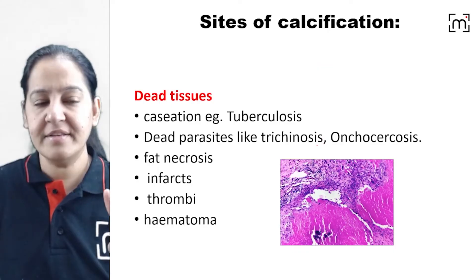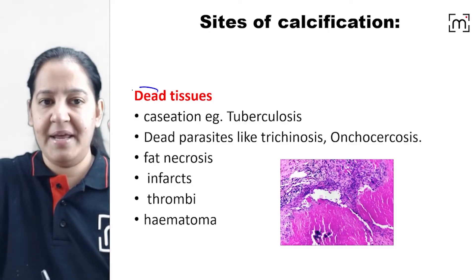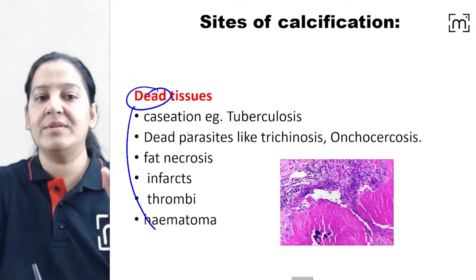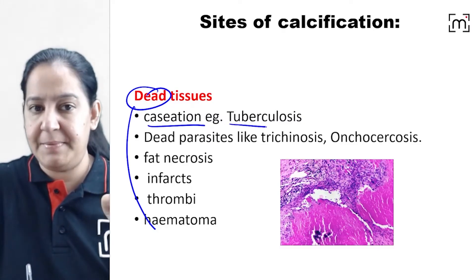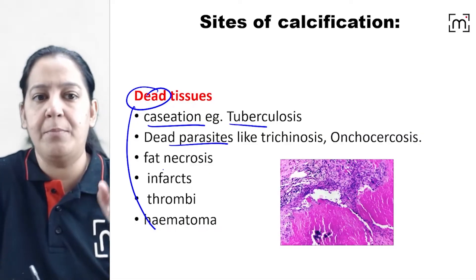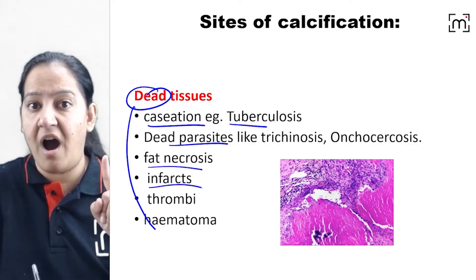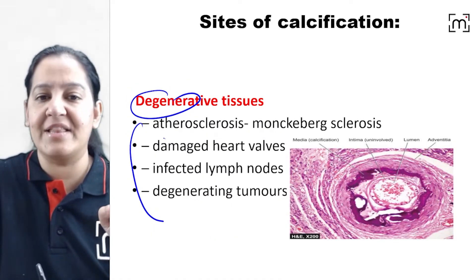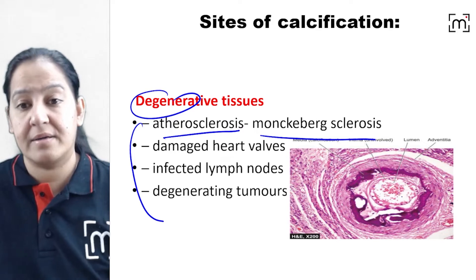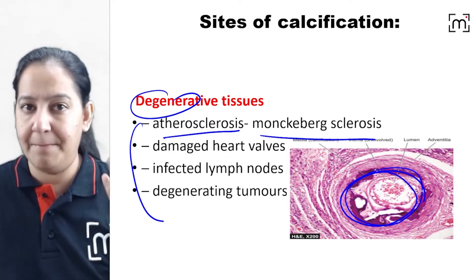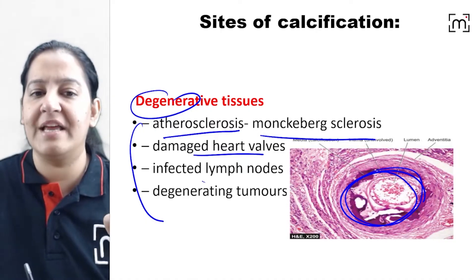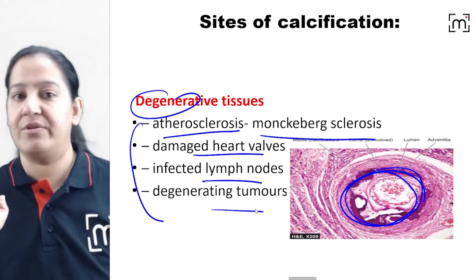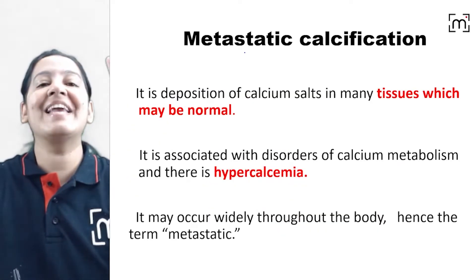The sites of dystrophic calcification include examples of both dead tissue and degenerated tissue. In dead tissue: caseous necrosis in TB, dead parasites in the body, fat necrosis, thrombi, hematoma, and coagulative necrosis. In degenerated tissue: atherosclerosis and Mönckeberg's sclerosis in the media of blood vessels, damaged heart walls, infected lymph nodes, and degenerating tumors.